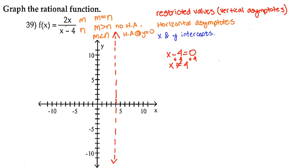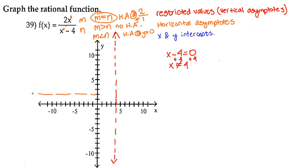In this case, the numerator's degree is 1 and the denominator's degree is also 1, so m equals n. That means we have a horizontal asymptote at the leading coefficient of the numerator over the leading coefficient of the denominator. The leading coefficient of the numerator is 2 and of the denominator is 1, so we have a horizontal asymptote at y equals 2. On the y-axis at 2, we draw our horizontal asymptote.